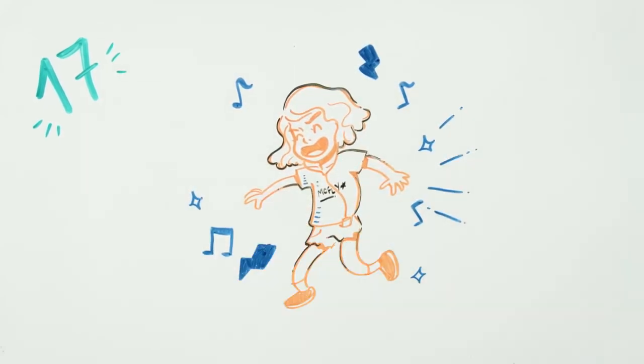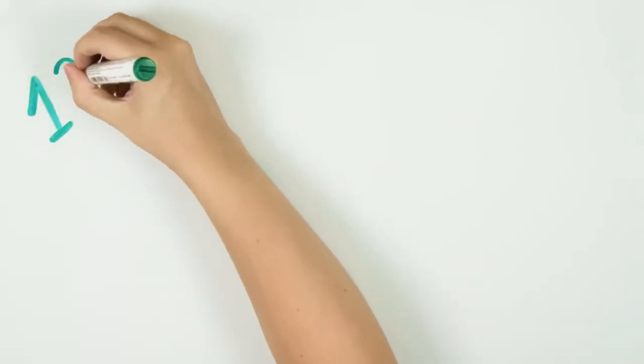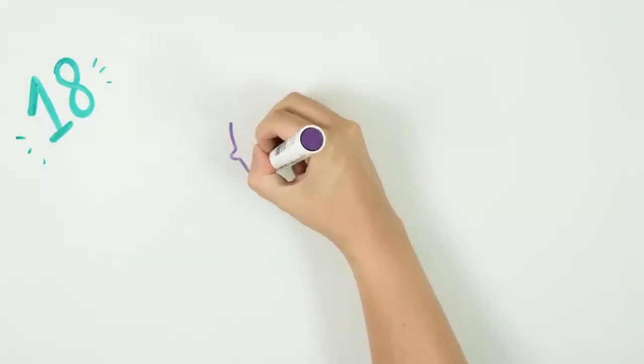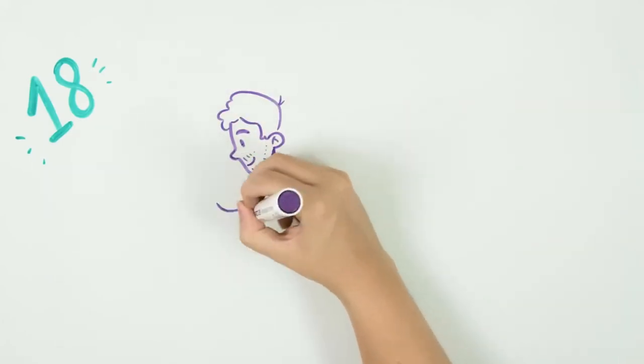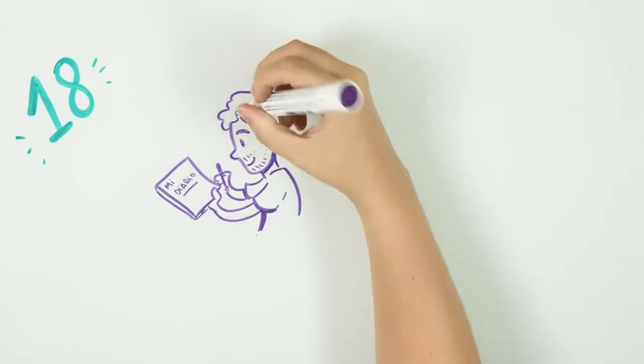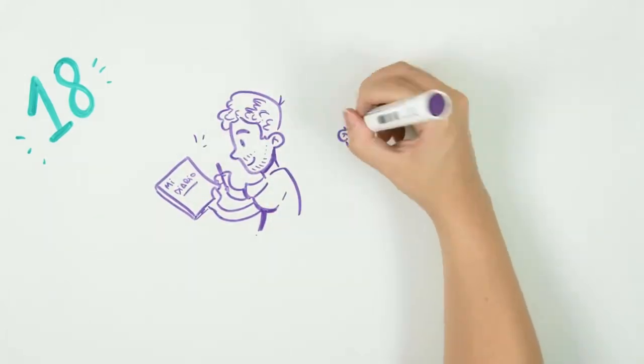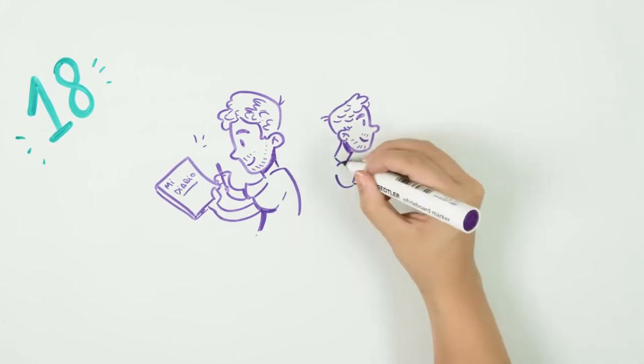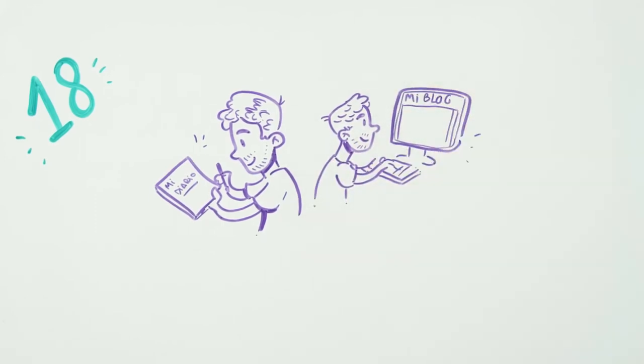Eighteenth: Writing will help you order concepts or simply see things that concern you from another point of view. It can be an intimate diary text or something more public like a blog. Thanks to these publications, you can get all your imagination and creativity out. This may be the summer you become a writer.